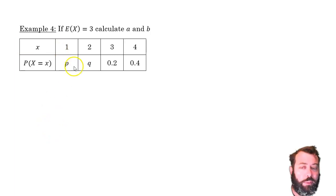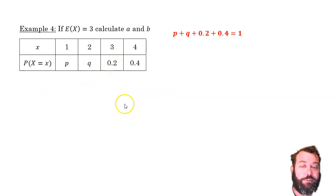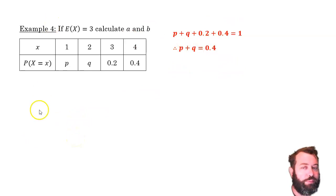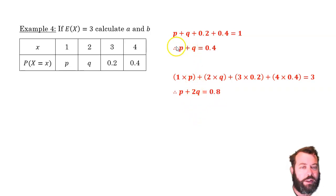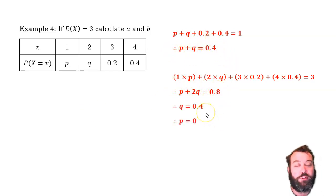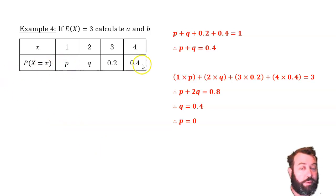We know the probabilities have to add up to 1, so P plus Q plus 0.2 plus 0.4 must equal 1, which tidies up to P plus Q equals 0.4. We also know the expected value equals 3, so: 1 times P plus 2 times Q plus 3 times 0.2 plus 4 times 0.4 equals 3. Tidying that up gives P plus 2Q equals 0.8. Taking the first equation away from the second, we get Q equals 0.4. Substituting back: Q equals 0.4 and P equals 0. A neat question testing your understanding of the sum of probabilities, expectation, and simultaneous equations.